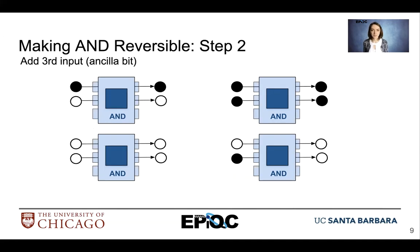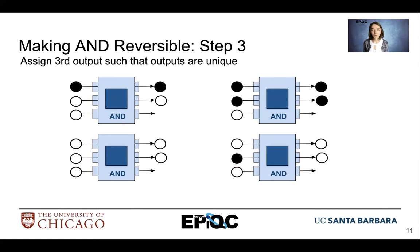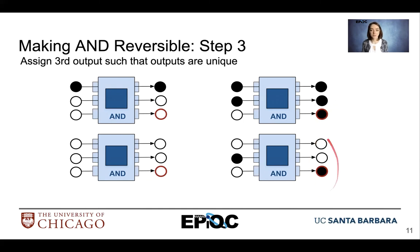We need to add more bits. In step two, we will add a third input, and we'll call this an Ancilla bit. We add a third input to all of these gates, and we'll give that a value of white ball or zero. Now we need to assign values to all of these — these assignments can be arbitrary. We just need to make sure that we assign values such that each output is unique for each input combination. The AND gate is now reversible.